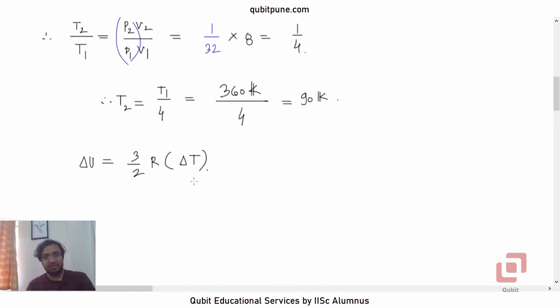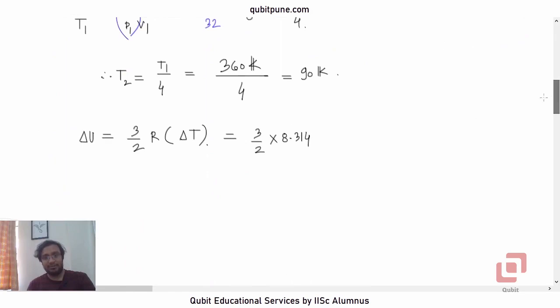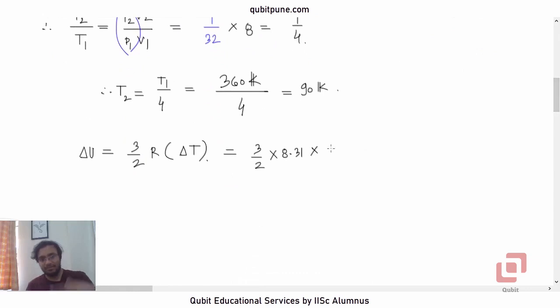So change in internal energy delta U equals 3/2 times the ideal gas constant, which is 8.31, times delta T which is 90 minus 360. So it will be -3/2 × 8.31 × 270, which is -3 × 8.31 × 135. 270 divided by 2 is 135. 135 × 3 is 405 times 8.31.